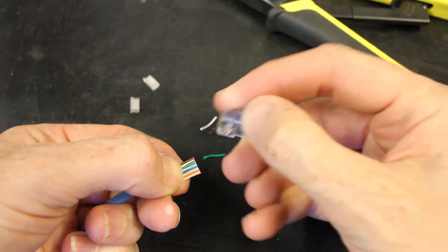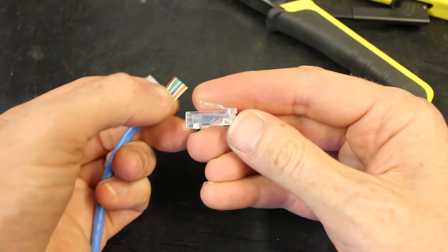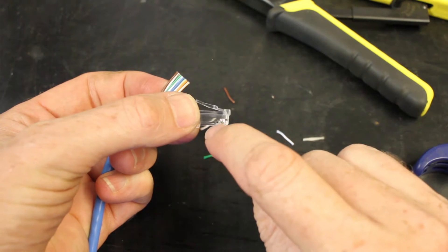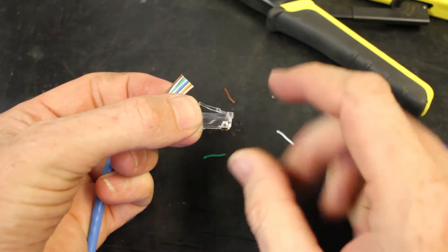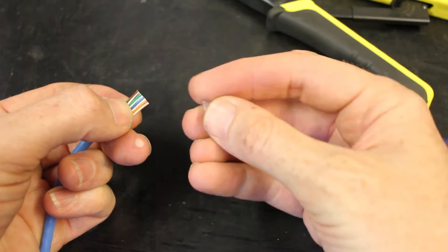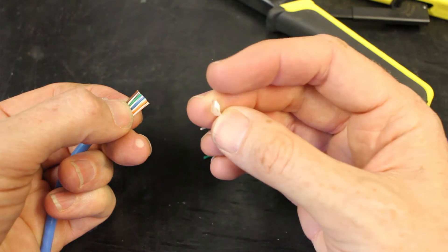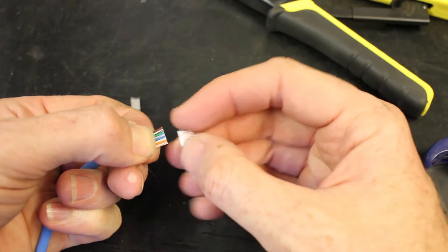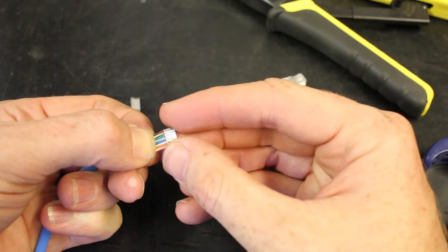Okay, if you look at these, notice at the end right here they've got a little straight area and then it angles down right here. In the connector we have these little plastic pieces that basically serve to align the wires in the correct order. Okay, we got it good.